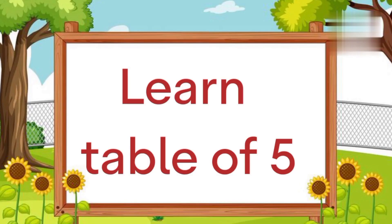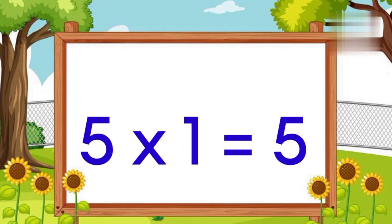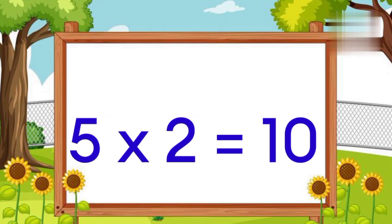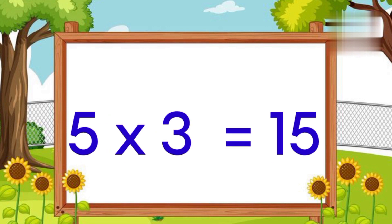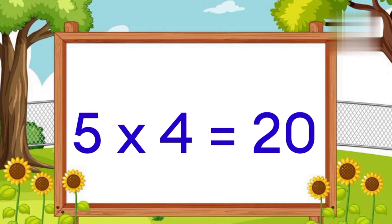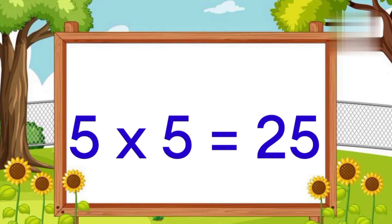The table of Five. Five ones are five. Five twos are ten. Five threes are fifteen. Five fours are twenty. Five fives are twenty-five.